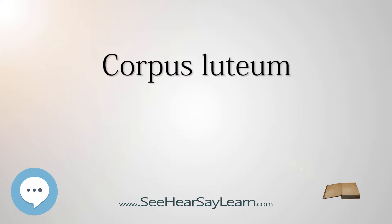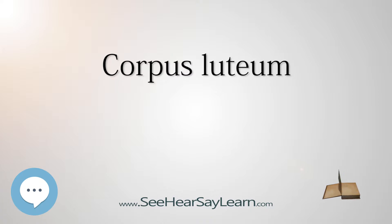The corpus luteum develops from an ovarian follicle during the luteal phase of the menstrual cycle, or estrous cycle, following the release of a secondary oocyte from the follicle during ovulation. The follicle first forms a corpus hemorrhagicum before it becomes a corpus luteum, but the term refers to the visible collection of blood left after rupture of the follicle that secretes progesterone. While the oocyte, later the zygote if fertilization occurs, traverses the fallopian tube into the uterus, the corpus luteum remains in the ovary. In humans, the size of the structure ranges from under 2 cm to 5 cm in diameter.